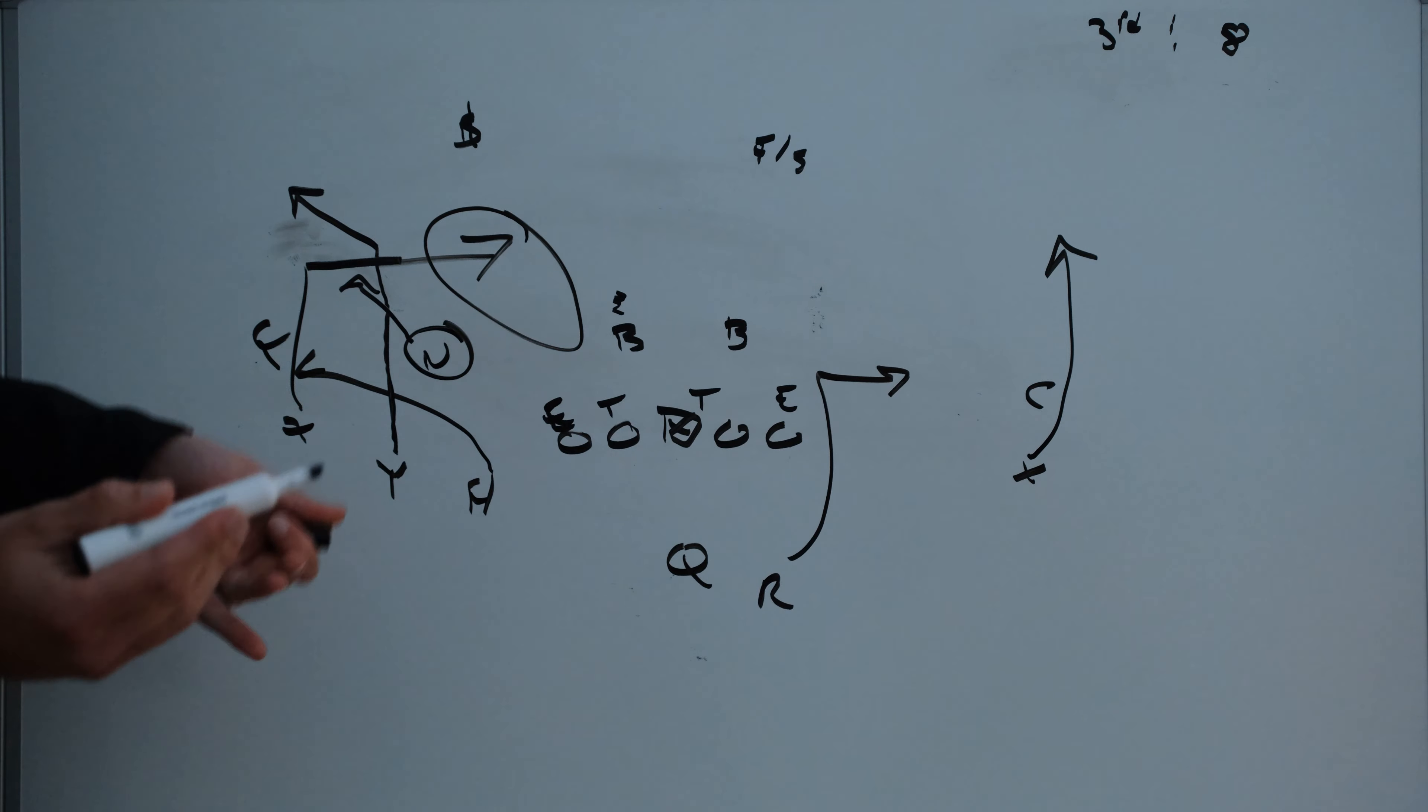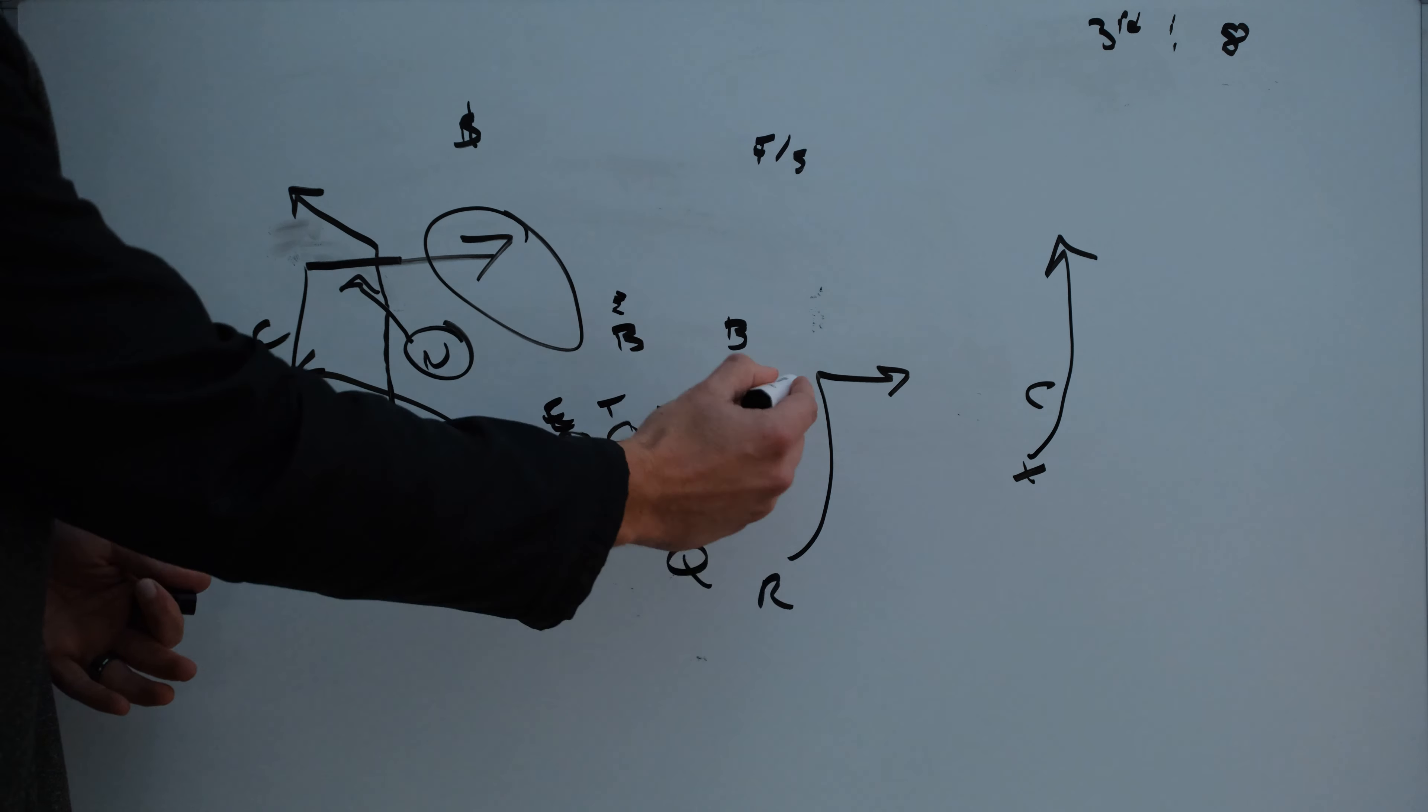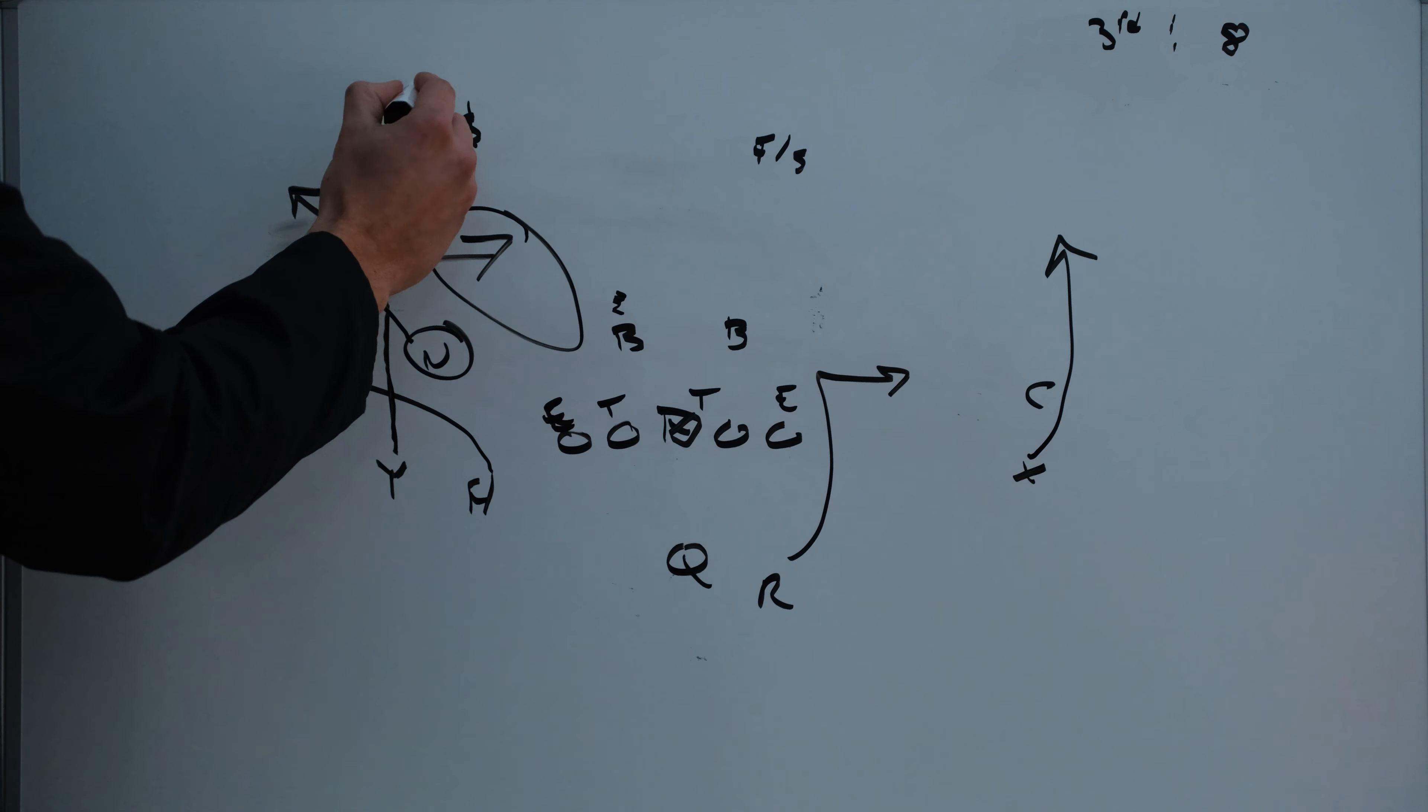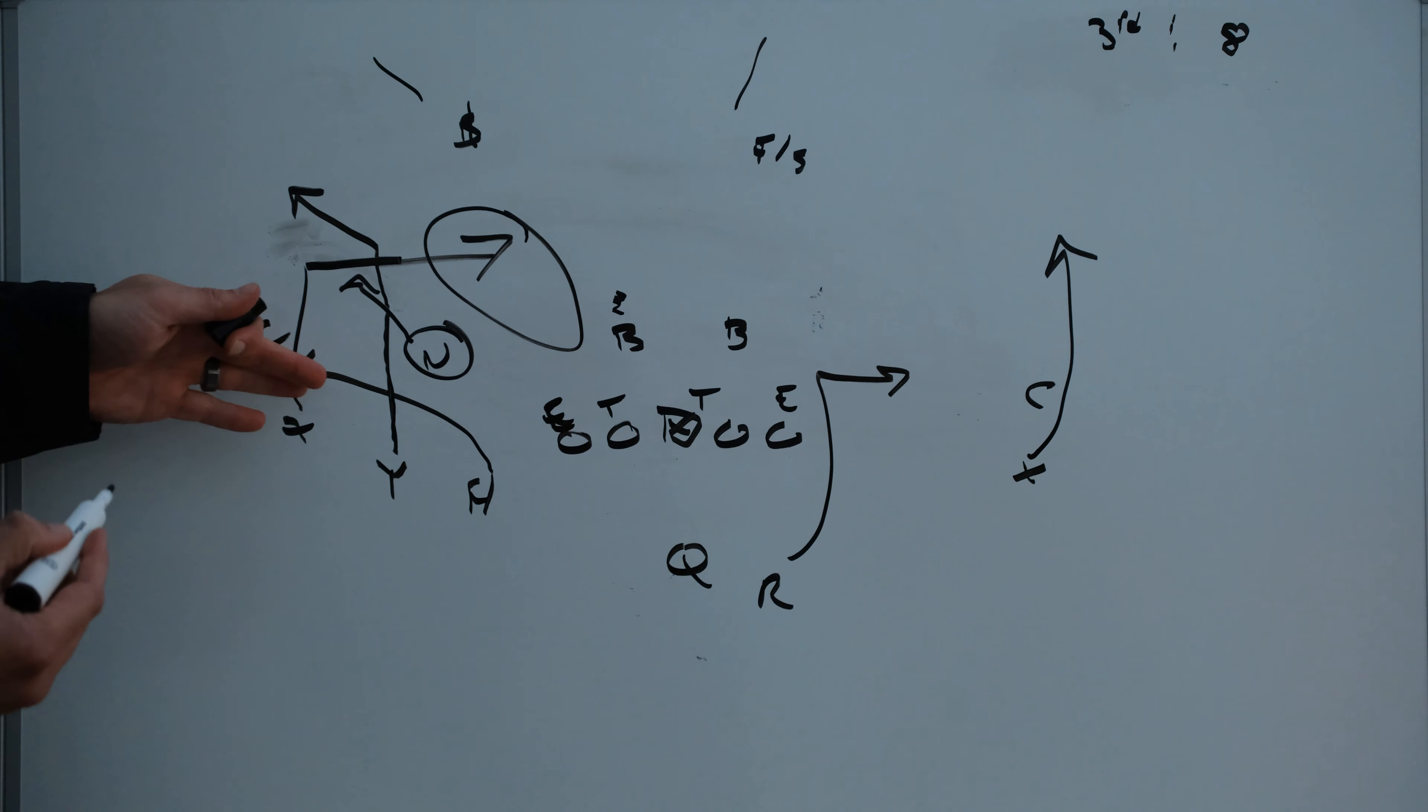As I said, if it was one high you could maybe look to this one on one matchup or even this back out of the backfield one on one with this backer. But in this case with two high both these safeties are playing the deep half and so you want to look to this three man side.